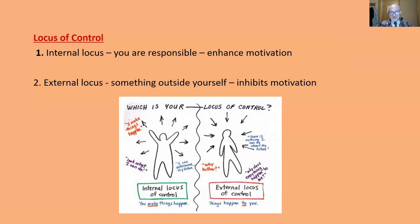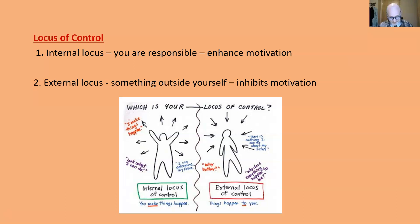External locus of control means something outside yourself is responsible, and this inhibits motivation. Something outside yourself is to blame for your failure or to cause your success — for example, 'I only won because...' or 'I lost because...'